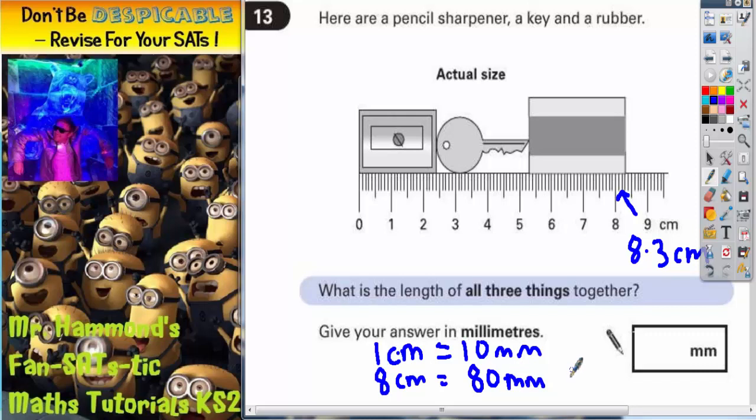So 8 centimeters would be 80 millimeters. So 8.1 centimeters would be 81 millimeters. 8.2 centimeters, 82 millimeters. So 8.3 centimeters is 83 millimeters. And that's the answer to part one.